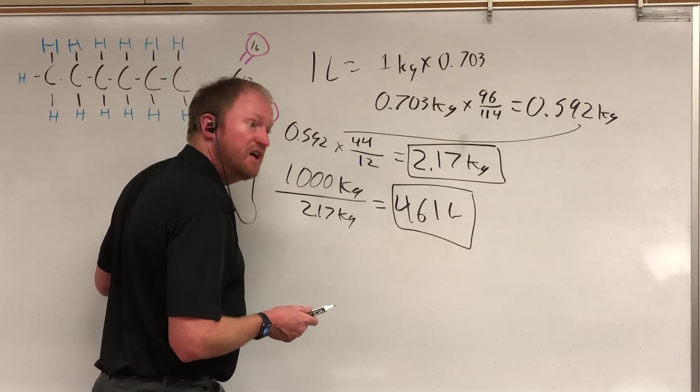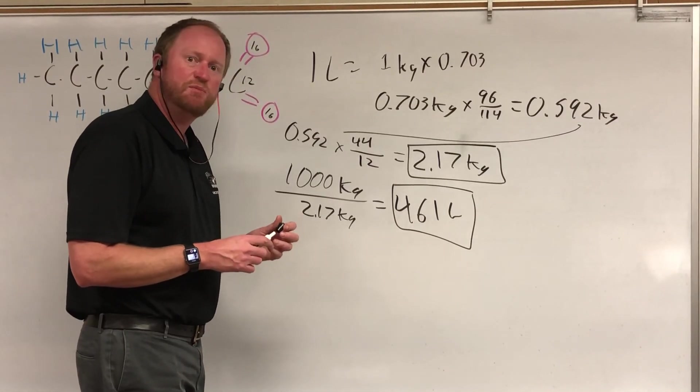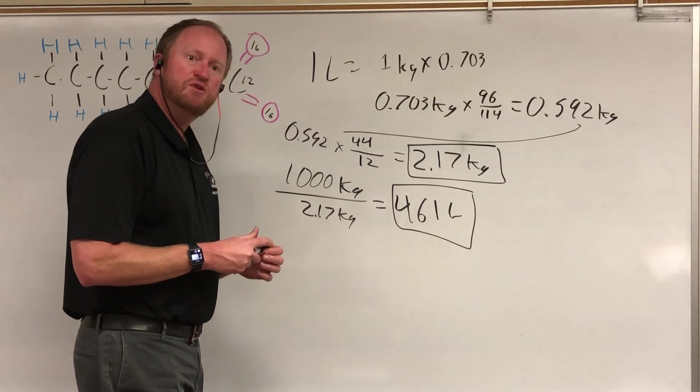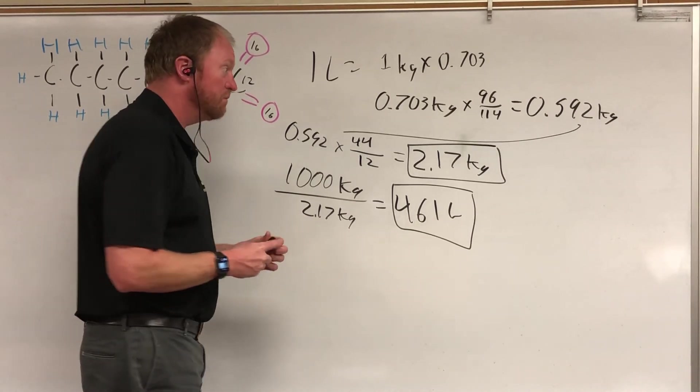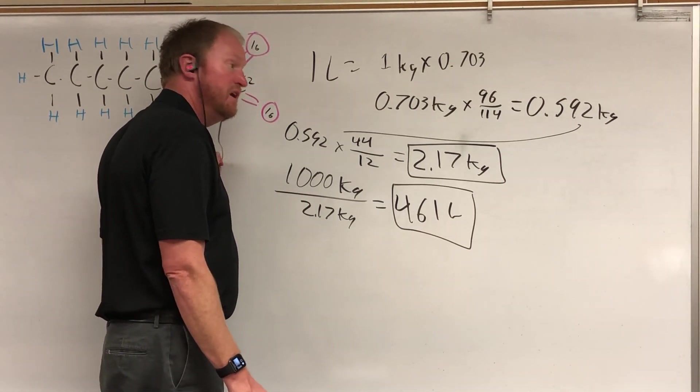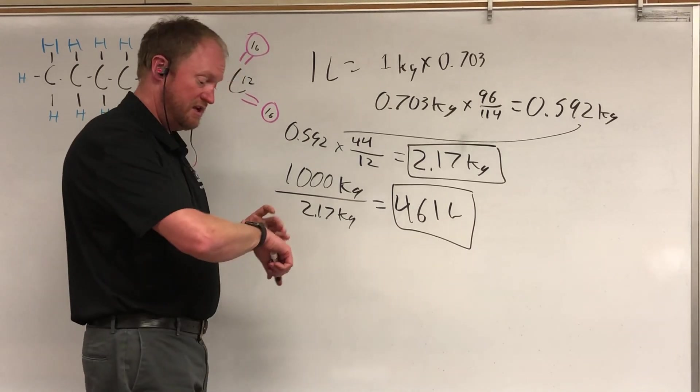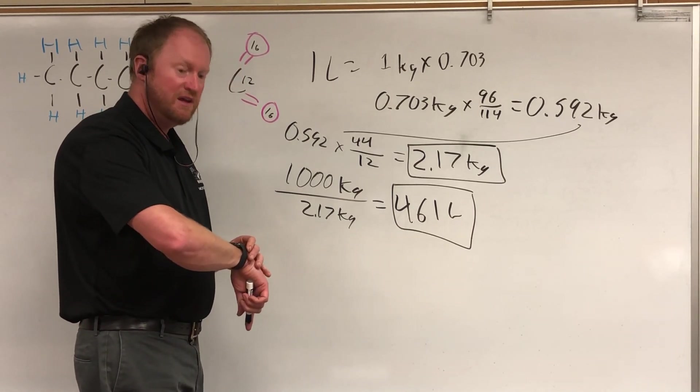So now you know. If you want to try to figure out how many tons of CO2 you're putting into the air every time you go fill up your car, you now know. Simply multiply the number of liters by 2.17 and you'll know exactly how much carbon dioxide burning that tank will produce. I hope this has been helpful. Have a nice day.